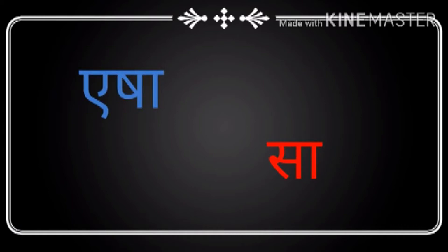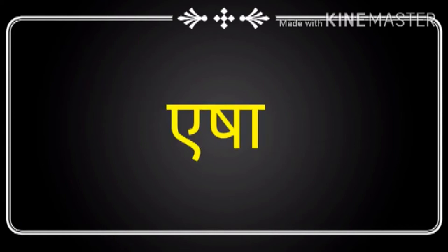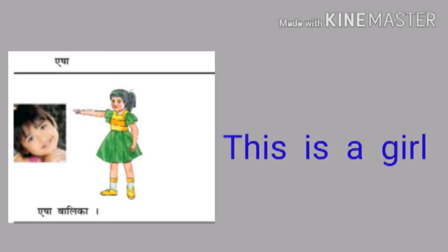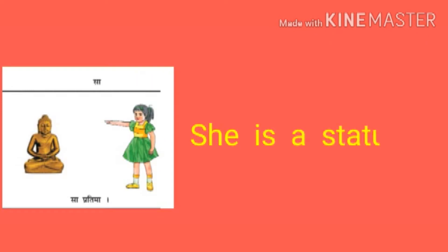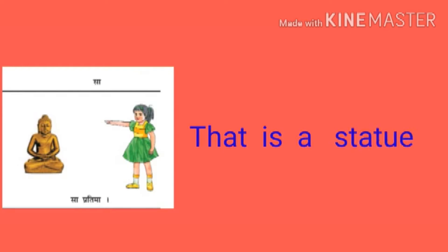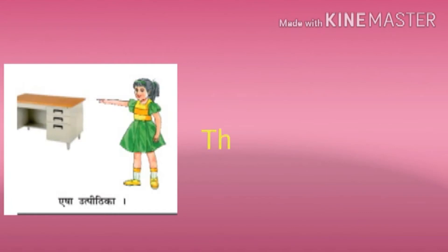Strilinga Ekavachnam is based on the words Isha and Sa. The first example is Isha Balika — this is a girl. The second Strilinga Ekavachnam example is Sa — she is a statue.